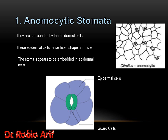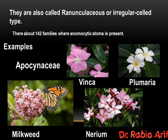As in the stomata present in the Citrullus plant, they are anomocytic stomata — without subsidiary cells, surrounded by the epidermal cells. These epidermal cells have a fixed shape and size. The stoma appears to be embedded in the epidermal cells, with the guard cells embedded in them and the stomata present in the center. Anomocytic stomata are also called ranunculaceous or the irregular cell type.